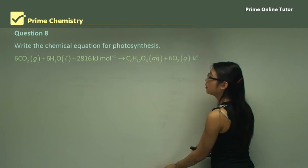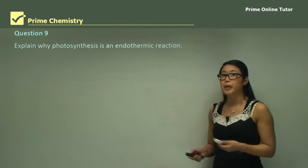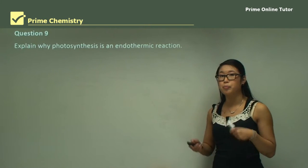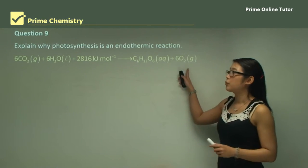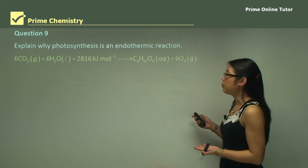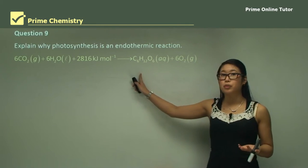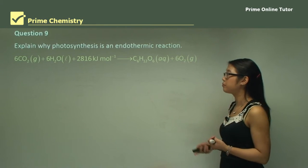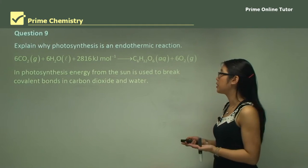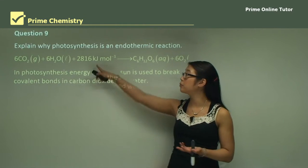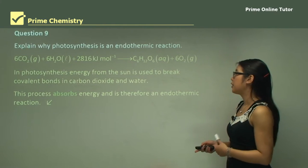Question nine: explain why photosynthesis is an endothermic reaction. Endothermic reactions take energy from the surroundings and use it. Looking at the equation: CO2 plus water plus energy converts into glucose plus oxygen. Photosynthesis is endothermic because it uses energy from the sun to break covalent bonds in carbon dioxide and water, and this process absorbs energy and is therefore endothermic.